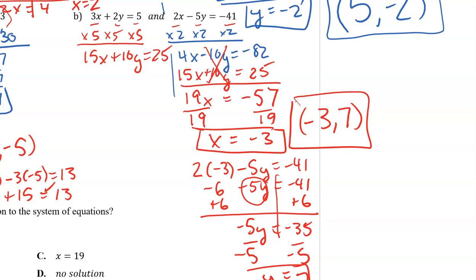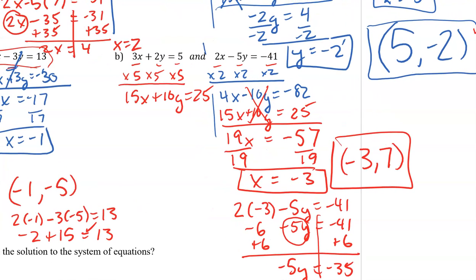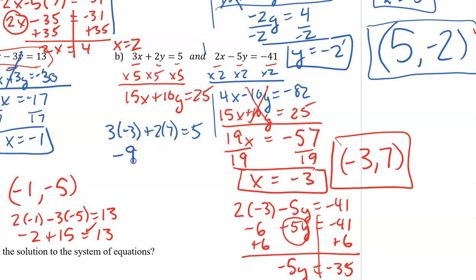So my solution is negative 3 comma 7. Let's go back to the first equation and check our work. 3 times negative 3 plus 2 times 7 should equal 5. 3 times negative 3 is negative 9; 2 times 7 is 14. Negative 9 plus 14 does equal 5. So we are good to go.